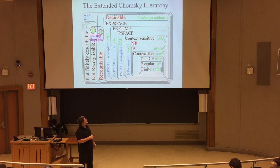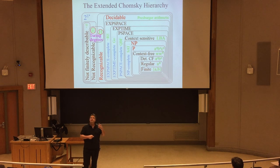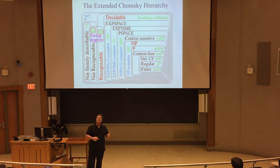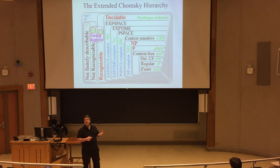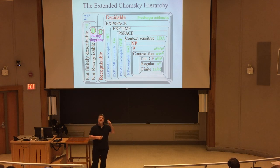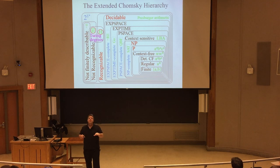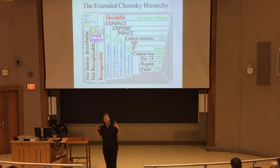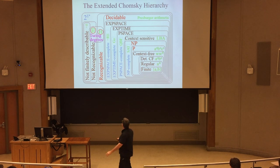A-star is regular but not finite. A^n B^n is deterministic context-free but not regular. Palindromes (WWR) are context-free but not deterministic context-free. A^n B^n C^n is not even context-free, but it is recognizable in polynomial time — in fact, in linear time using a Turing machine. There are other classes here as well, and many more besides the ones shown. There are literally hundreds of named classes and an infinity of unnamed ones. This is a very simplified, tip-of-the-iceberg view of the overall picture.